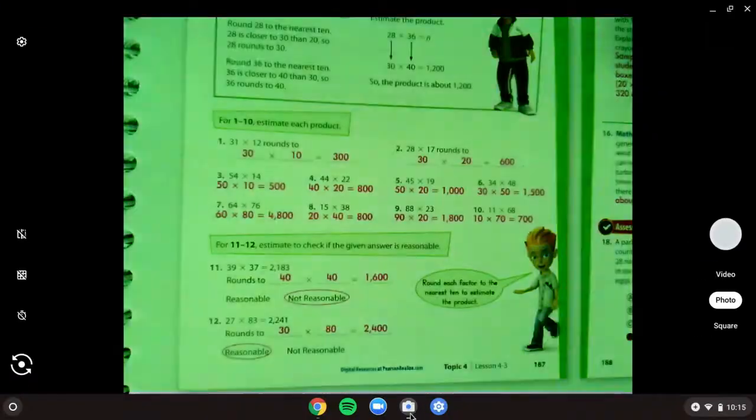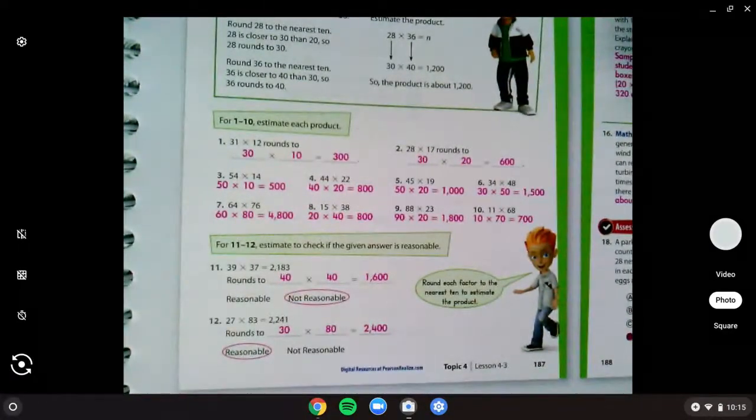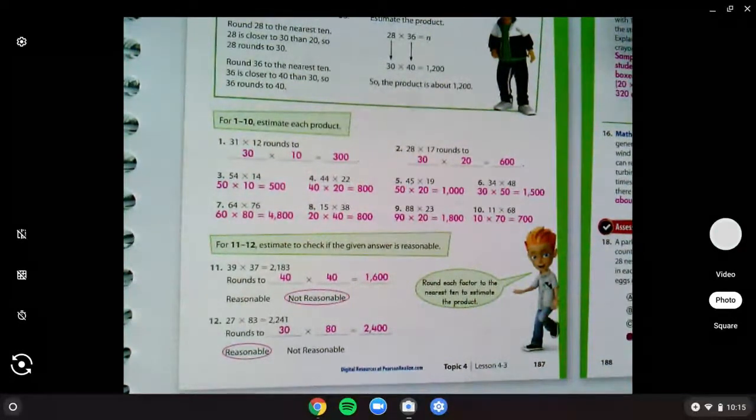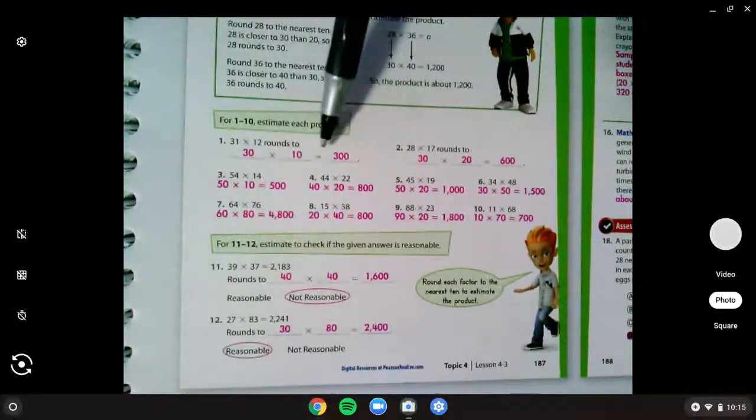Go ahead and get your math books open to page 187, and we'll take a look at numbers 1 through 6 and 11 on this side, and then we'll look at the back. Number 1, you need it to round to 30 and 10,